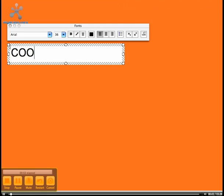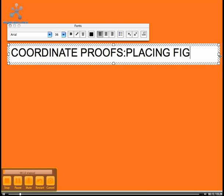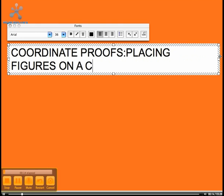Okay, today we'll be talking about coordinate proofs. First, the definition of a coordinate proof is that it involves placing figures in a coordinate plane, then using slope or distance formula as well as postulates and theorems to prove that the statements about the figure are true.